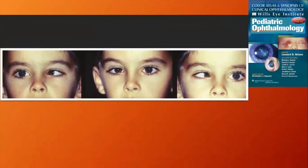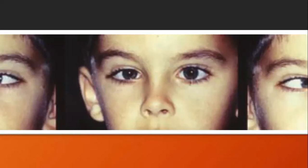In the primary gaze there is esotropia in the right eye. You can say confidently 'esotropia in the right eye' because it is really evident — the nasal sclera is smaller and the Hirschberg reflex is temporally centered. You don't need to say 'it seems to be.'